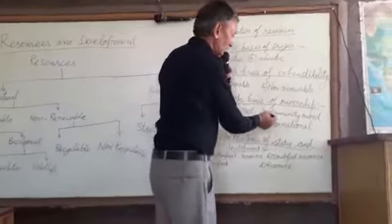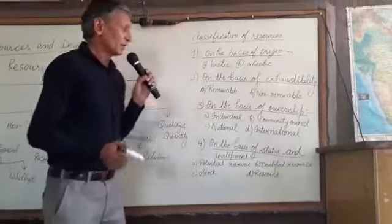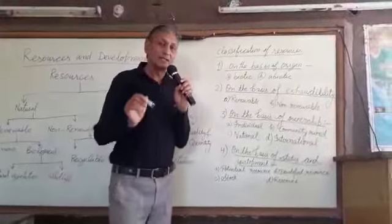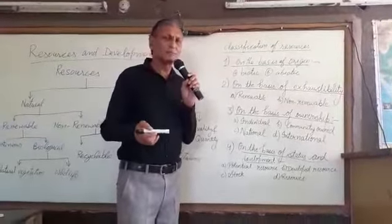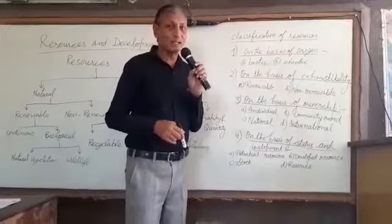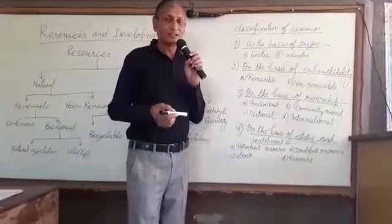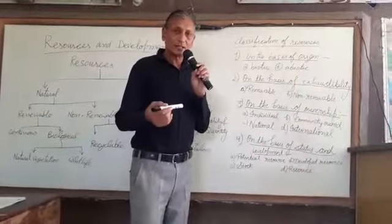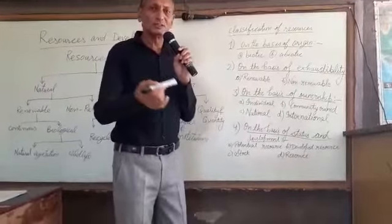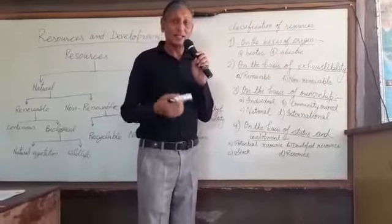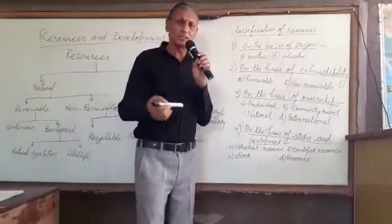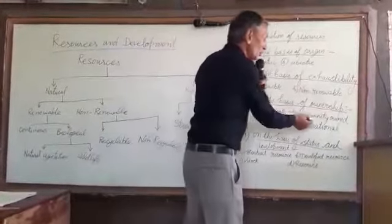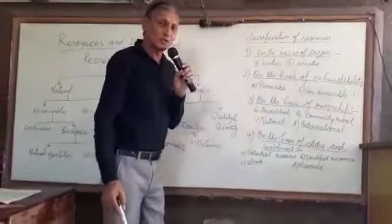Talking about community resources, all those resources which are owned by a community — say for example, the park where children play, the playgrounds, the land where all the animals of the village graze, the grazing grounds — all those lands are community owned. They are not owned by individuals.